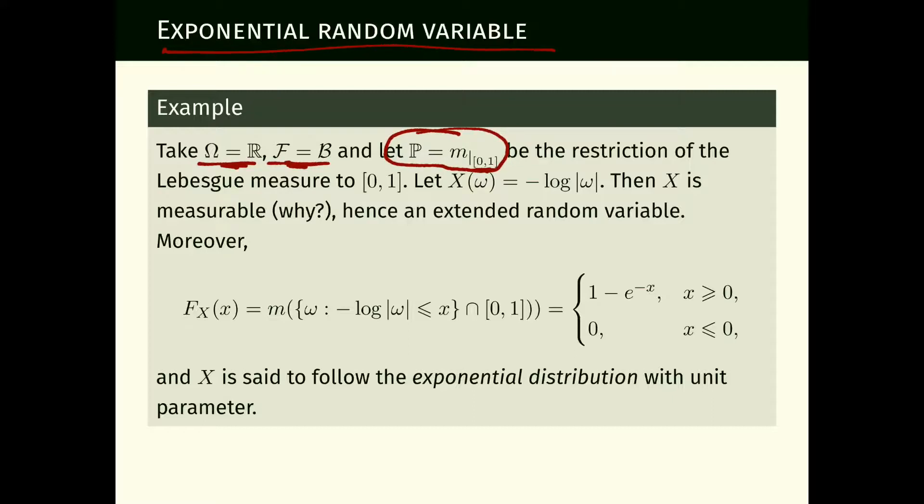Already, if we look at omega itself as a random variable, we've got a random variable whose distribution is uniform on (0,1). However, we're going to do something more interesting: we define x of omega to be minus the logarithm—logarithm always means natural logarithm, the only logarithm we care about in this module—minus the logarithm of the absolute value of omega. If omega is 0, this would be minus infinity, but that happens with probability 0. This function x is measurable, hence an extended random variable.